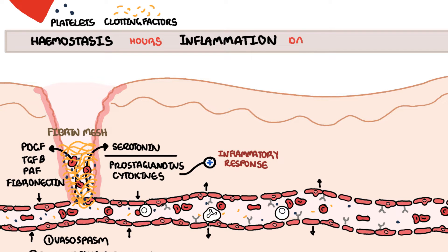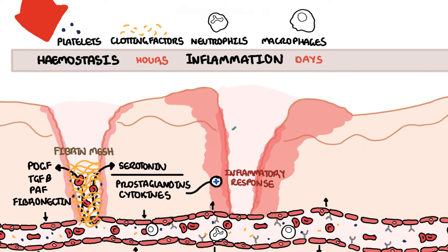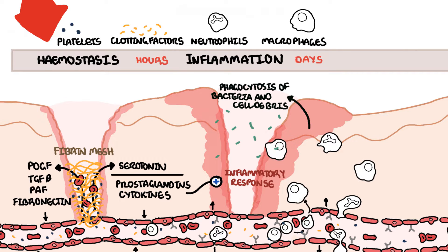In inflammation, the key players are the neutrophils and the macrophages. Neutrophils are the first inflammatory cells that infiltrate the wound site, peaking at 24 to 48 hours. The primary role of neutrophils is phagocytosis, which is the eating of things such as bacteria and tissue debris. Macrophages are the most important regulatory cell in the wound healing inflammatory phase, typically appearing at the wound site 72 hours after injury.